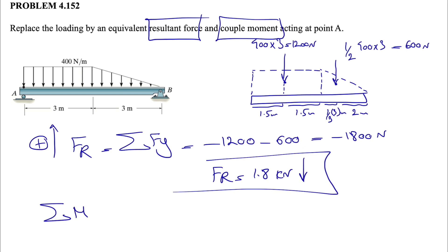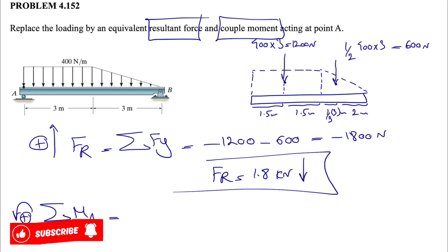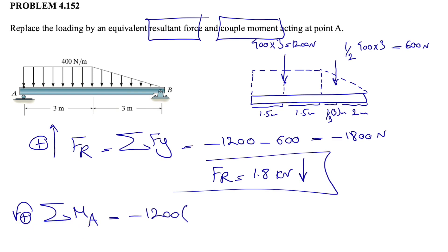We found the resultant force. Now we need to find the couple moment to complete the question. We take the sum of all moments about point A, calling counterclockwise positive. We'll use the 2D shortcut for finding the moment — the link is in the description. Starting with the 1200 N force, since the moment is clockwise, we assign it a negative sign.